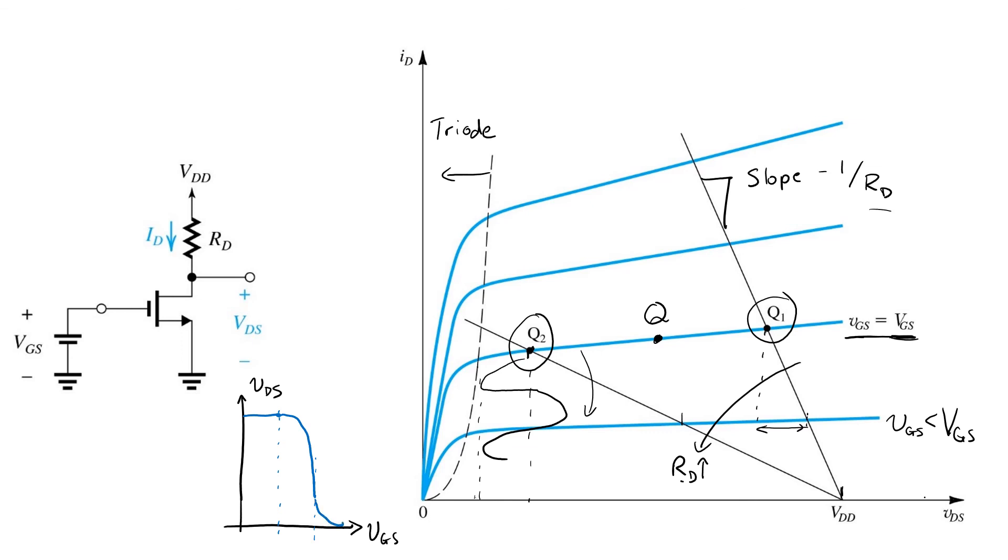So this trade-off we're discussing is equivalent to selecting whether we want to choose an operating point around here or one a little bit further up that's more centered within the available output range.